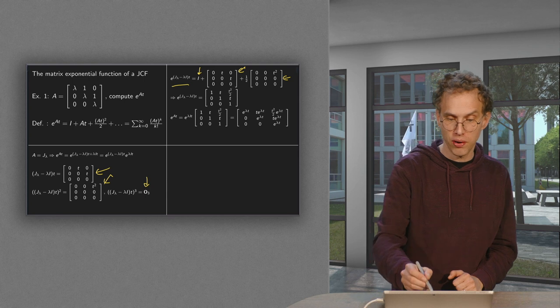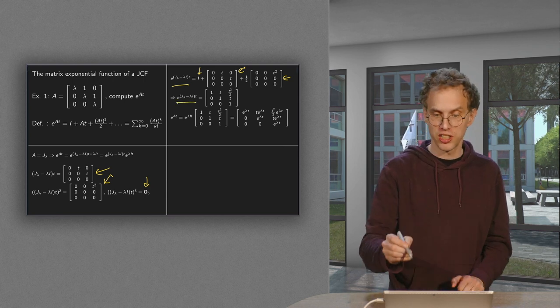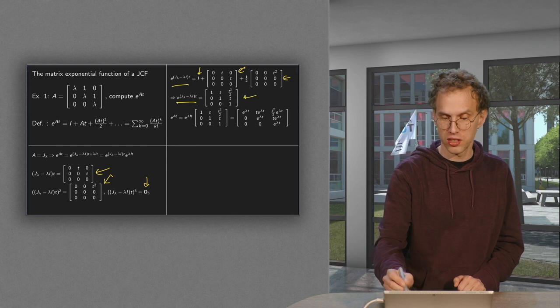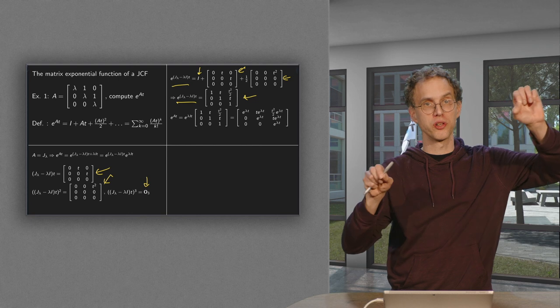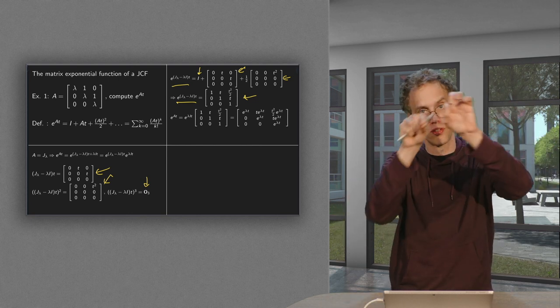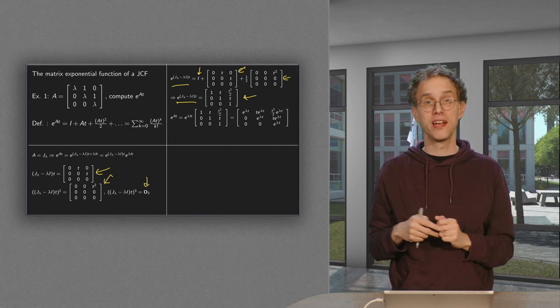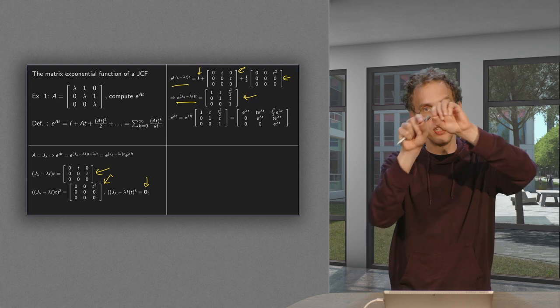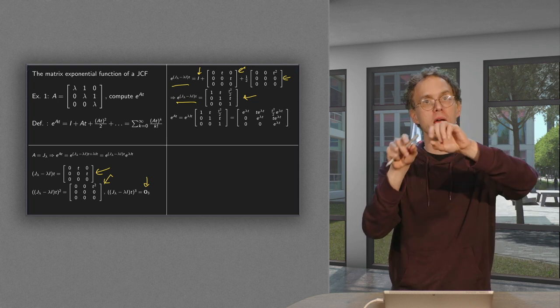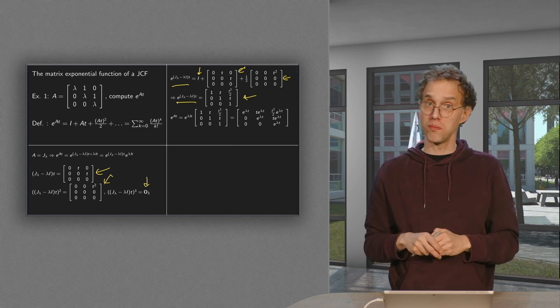So e to the power J lambda minus lambda I times t, it's just the sum of those three matrices, so you get this matrix over here. And you see a pattern: you have ones on the diagonal, then t's, then t squared over 2. And if you would go on, if you would have a bigger Jordan block, you have ones, t's, t squared over 2, t cubed over 3 factorial, t to the power 4 over 4 factorial, until you run out of your matrix.